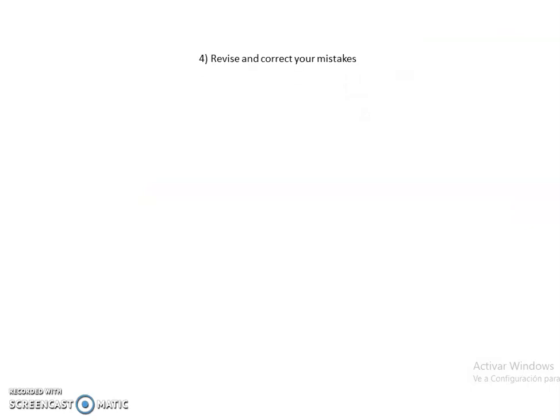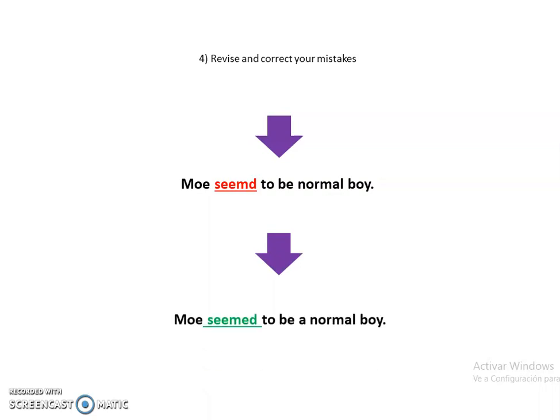Now, look at the last tip. It says, revise and correct your mistakes. For example, the sentence says 'most seem to be a normal boy.' Remember that verbs in the past go with -ed if they are regular, and this one only has a -d. So, I read it again and corrected it.